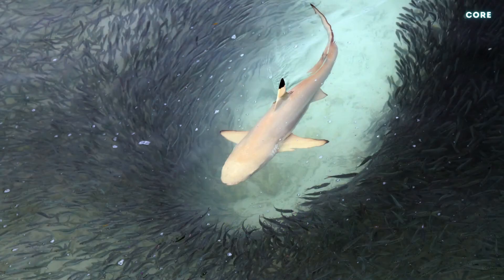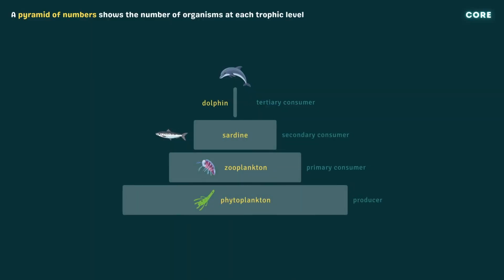There are usually large numbers of organisms at the beginning of a food chain and small numbers at the other end. Pyramids of numbers show this relationship, with the width of the bands representing the number of organisms at each trophic level. Here, millions of microscopic phytoplankton are consumed by larger and less numerous zooplankton like krill, which are in turn eaten by small fish like sardines. These sardines can only sustain a small number of dolphins, since each dolphin needs to eat a lot of sardines to survive.